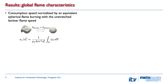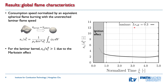One of the crucial quantities for engine applications is the consumption speed, normalized by an equivalent spherical flame running with the unstressed laminar flame speed, where the equivalent flame has the same volume as the flame kernel. For the laminar kernel, the high initial consumption speed is due to the ignition effect, which is not the focus of this study. The normalized consumption speed is significantly larger than unity due to the Markstein effect, which decreases with decreasing global curvature as the kernel grows. Close to the end of the simulation, the consumption speed increases again.